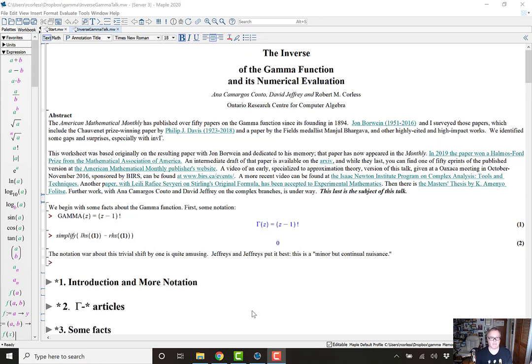So begin with a fact about the gamma function. The gamma function is something that interpolates the factorial. Gamma of z is z minus 1 factorial. And the two different notations for the same function is actually due to Euler. People blame other people for the gamma notation, but it was in fact Euler as well as the factorial notation. But too late. We have to deal with both of those. It's a minor but continual nuisance.